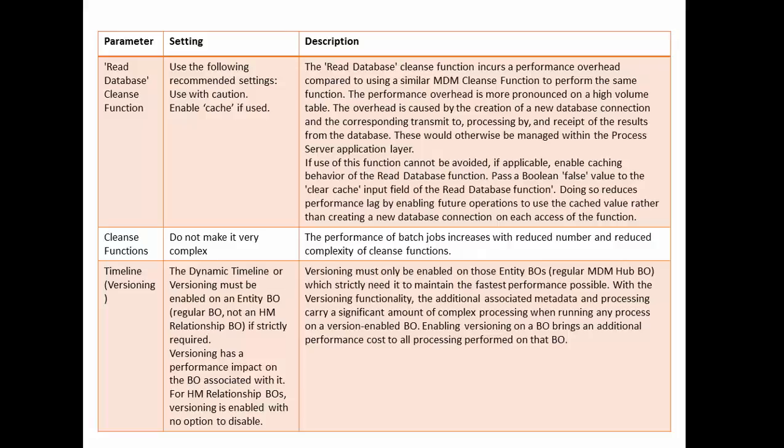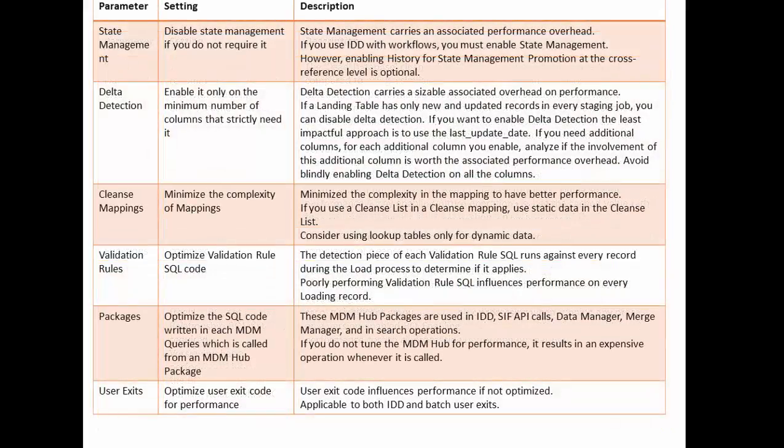Regarding timeline, also called versioning, the dynamic timeline or versioning must be enabled on the entity base object — a regular base object, not an HM-related base object — only if strictly required, as versioning has a performance impact. For HM relationship base objects, versioning is enabled with no option to disable. For state management, disable it if you do not require it, as it carries an associated performance overhead. If you use IDD with workflows, you must enable state management; however, enabling history for state management promotion at cross-reference level is optional.